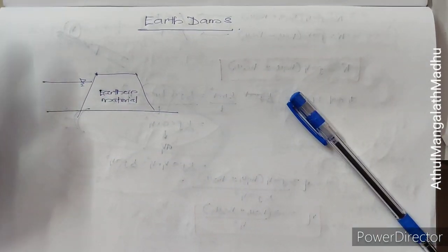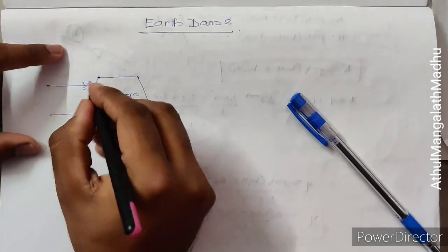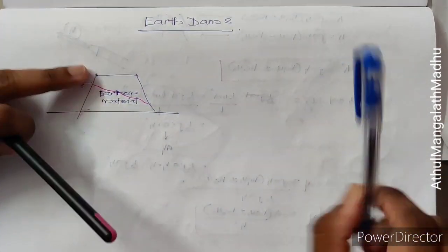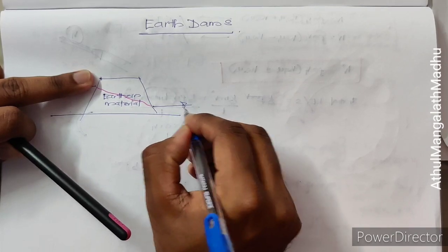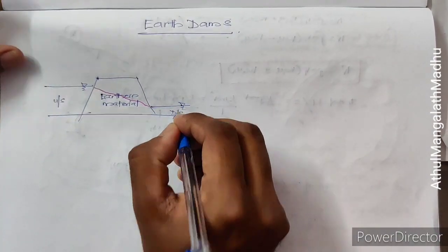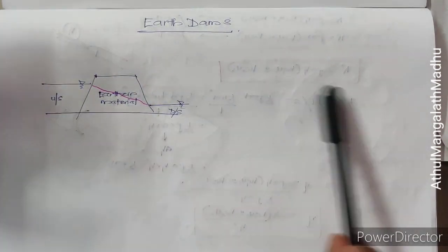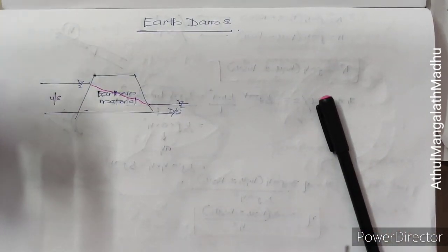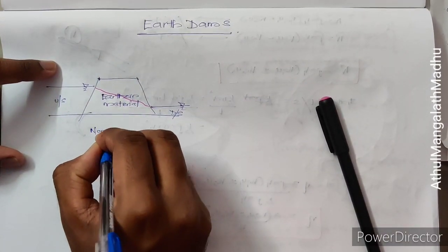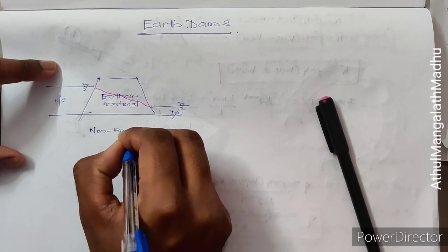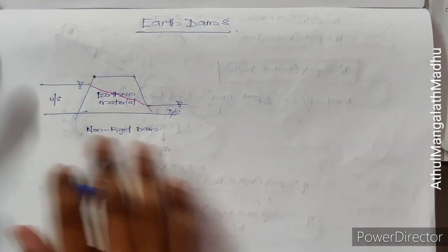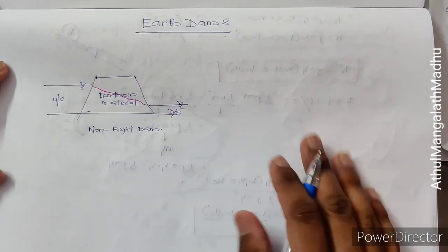Water will be seeping through this material — coming through and going down. The upstream side holds water, and the downstream side is where seepage exits. This is not a rigid material; rigid material is very strong and impervious. An earthen dam is a non-rigid type of dam.